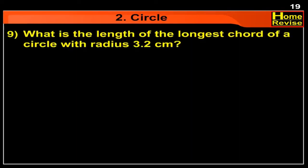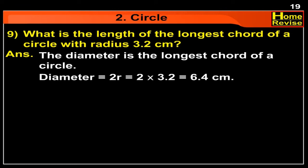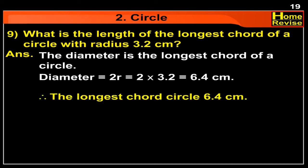What is the length of the longest chord of a circle with radius 3.2 cm? Answer: The diameter is the longest chord of a circle. Diameter is 2 into radius, so it is 2 into 3.2, that is 6.4 cm. So the longest chord of the circle is 6.4 cm.